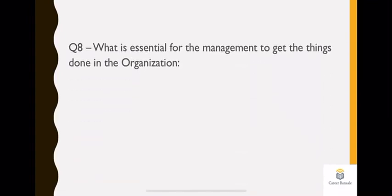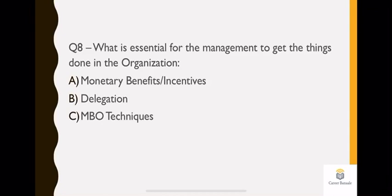Question eight: what is essential for the management to get things done in the organization? What is necessary for management if they want to get work done from their employees in the organization? Options are: monetary benefits, delegation, MBO techniques, or all of the above. Option A won't work. Monetary benefit or incentive comes later when you finish the work. Option B, delegation, can be possible because if you want to get work done, delegation is very necessary. Option C, MBO technique, has nothing to do with it because here both employer and employee are involved. Option D also won't work because monetary benefit won't work. So what remains as your answer? Option B, which is delegation.